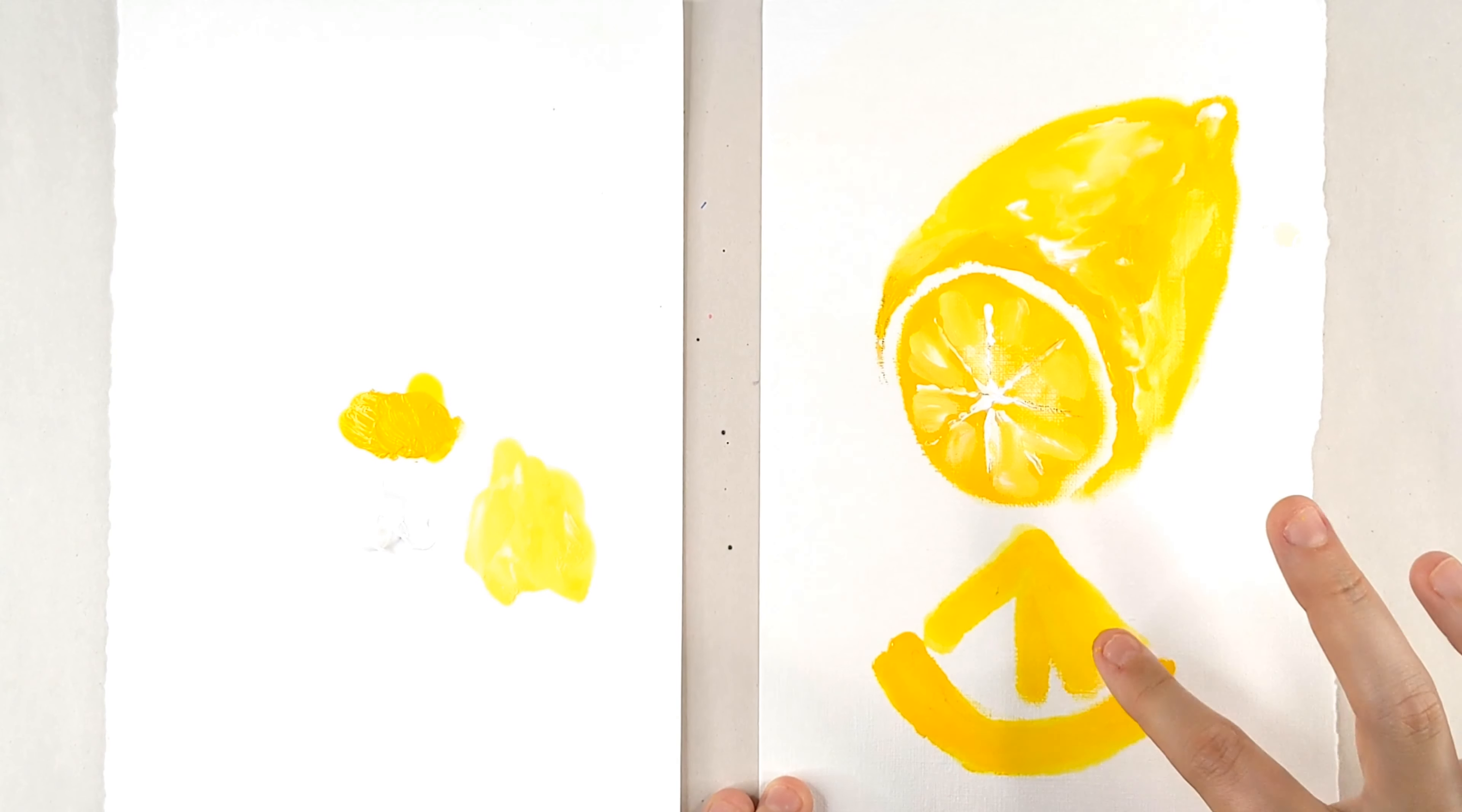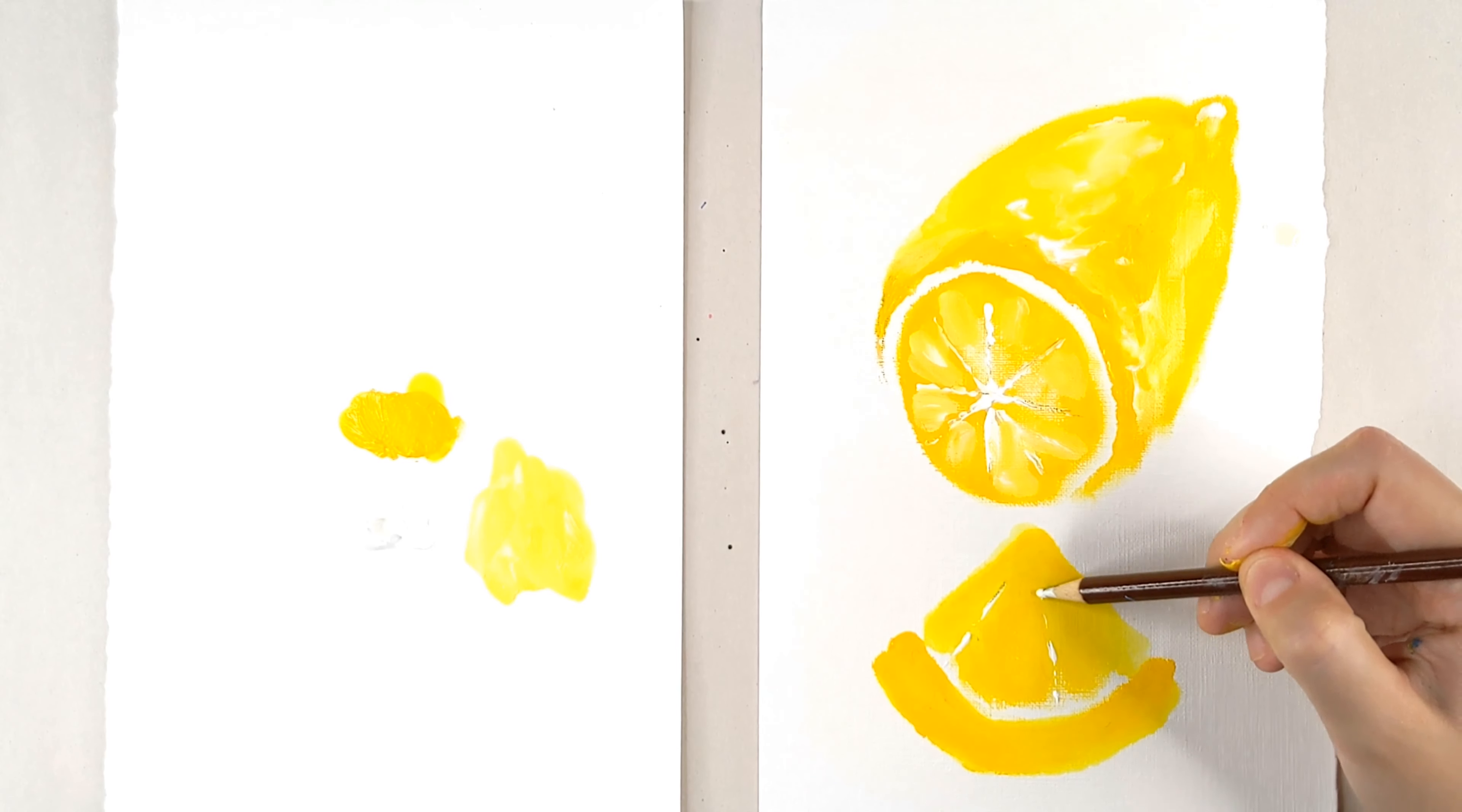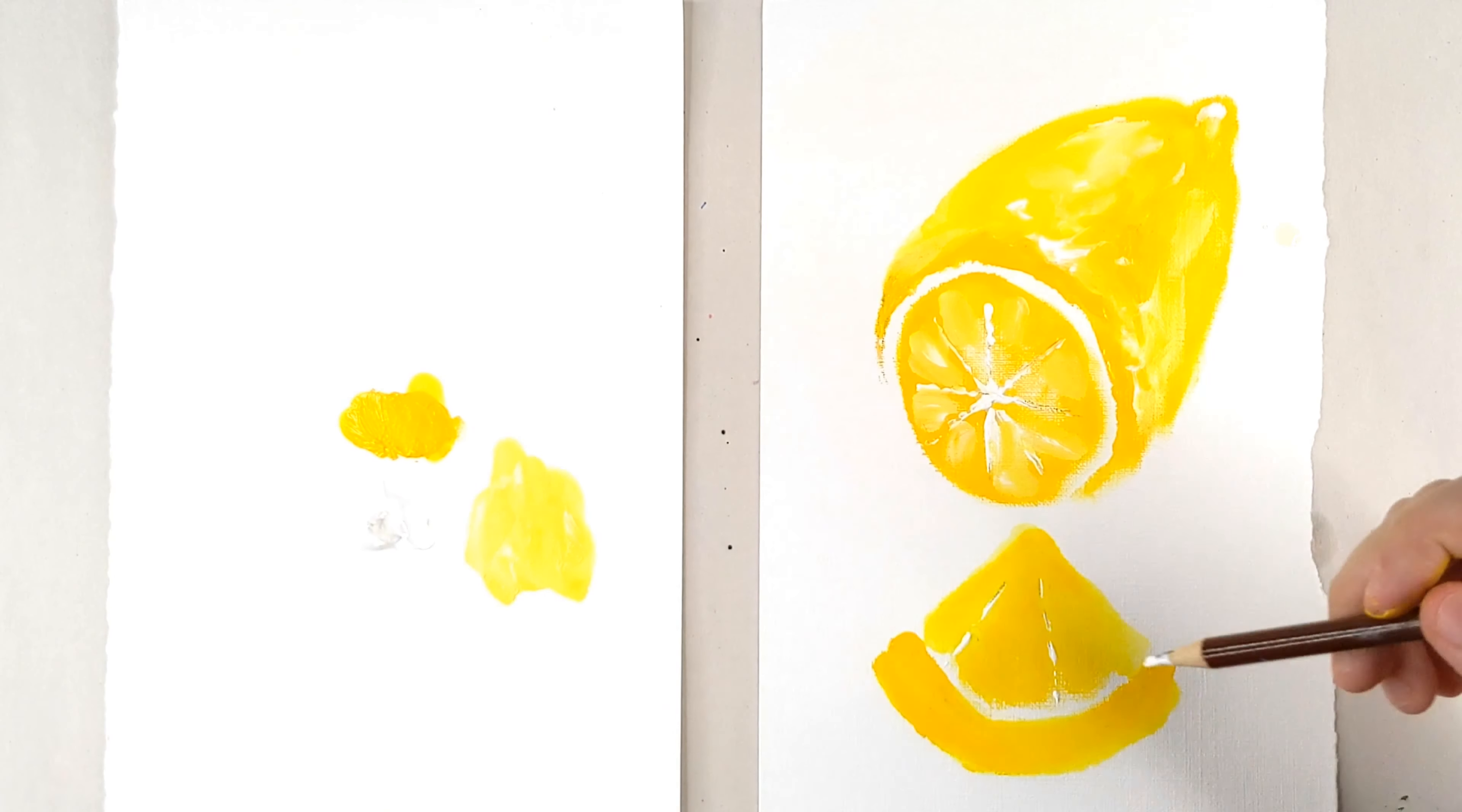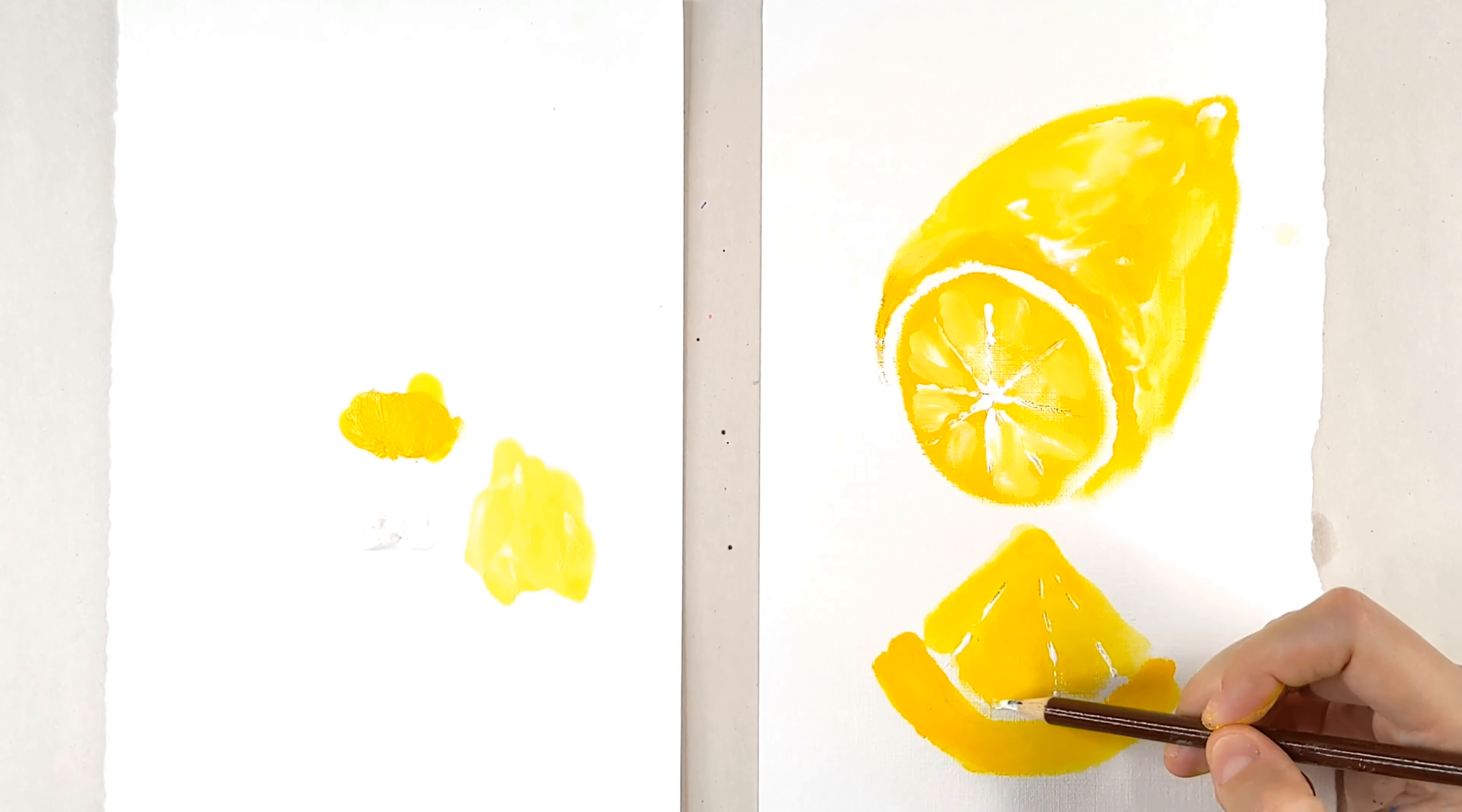You just kind of do the same thing. You make little lines going out and color it in without coloring all of it, making sure that you leave a little bit of a rind. Then go in with your white and throw a couple of little lines.